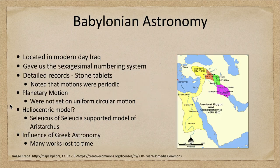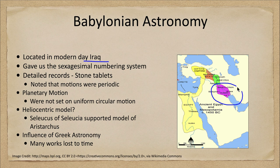Let's go ahead and do a quick overview of what we have here. First of all, where is Babylonia? That's actually part of modern day Iraq and you can see it pictured on the map of the Middle East here. The Babylonian region was about in here, a little ways across the Arabian Peninsula from Egypt.